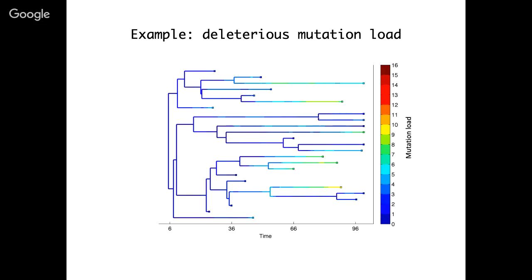This shows us two things. First, the mutation process itself can actually shape the branching structure of a phylogeny. Second, if we were somehow able to take into account the branching structure of the phylogeny, we could potentially infer or estimate the fitness of particular lineages from that branching structure.